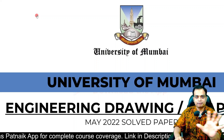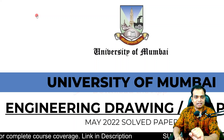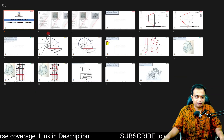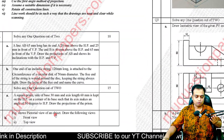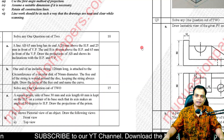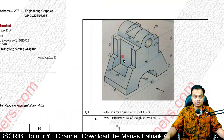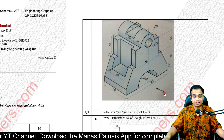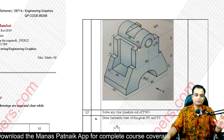Question number two has two parts. Part A we've solved easily. Part B is a bit challenging and is based on orthographic projection. We've been given the pictorial view of an object and we need to create the front and top views. The X mark indicates the front view direction.